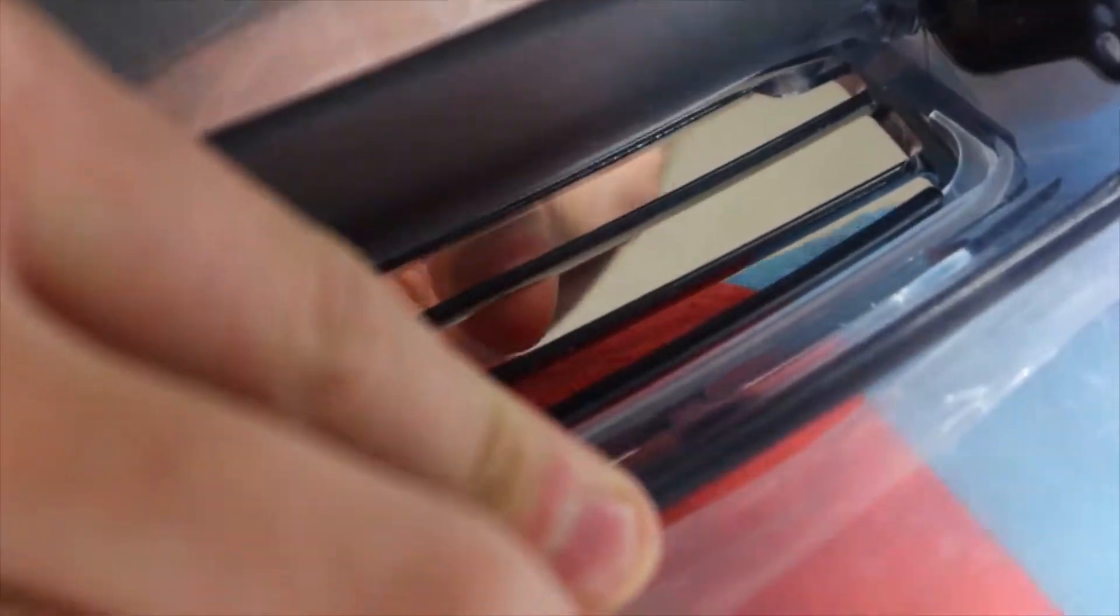You'll just start on one side, so put some pressure on the left side. Once that's seated in, work your way over to the right. Once the visor is seated all the way in the top of the lip,